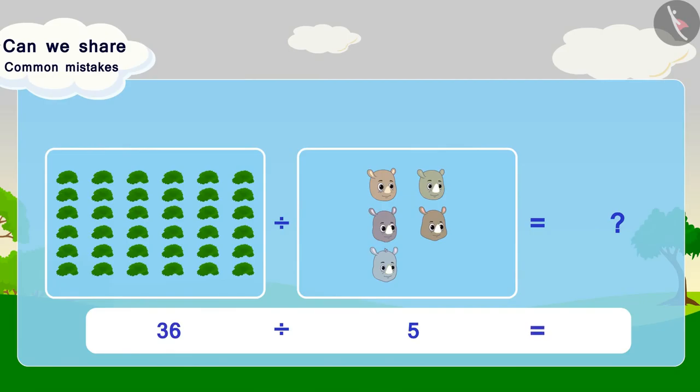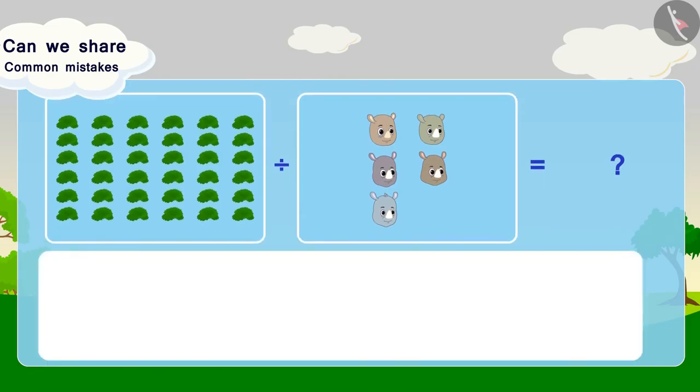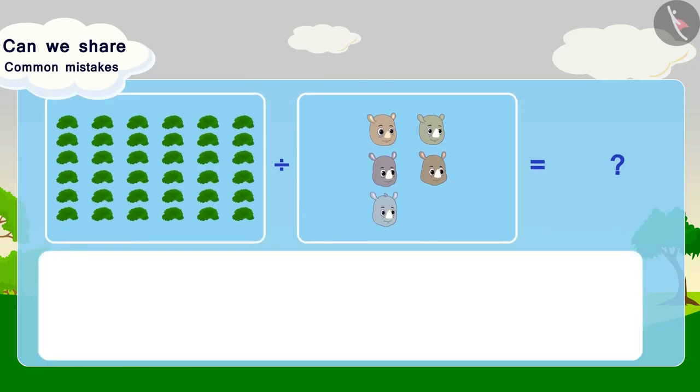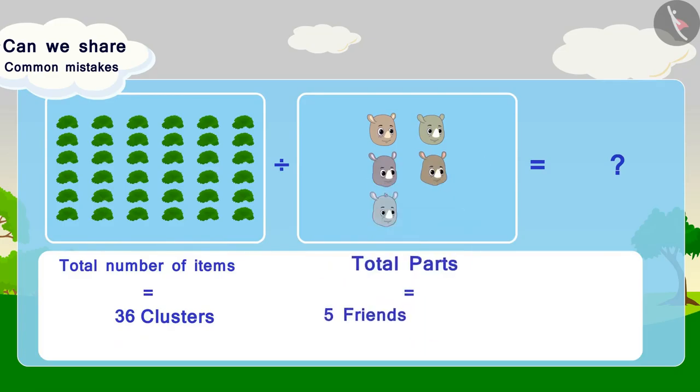In this option, we see that total number of items equals 36 clusters, total parts equals 5 friends. We have to find out how many clusters are there per friend, per part.